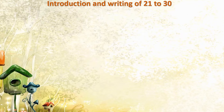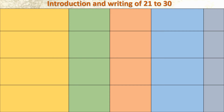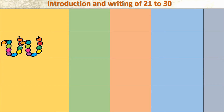Introduction and Writing of 21 to 30. Dear children, here we will draw a table so that it will become very easy to learn. Now you can see the string of beads — this is a string of beads. How many beads are there? 10 beads. This is one 10. This is two 10s, meaning 20 beads are there.